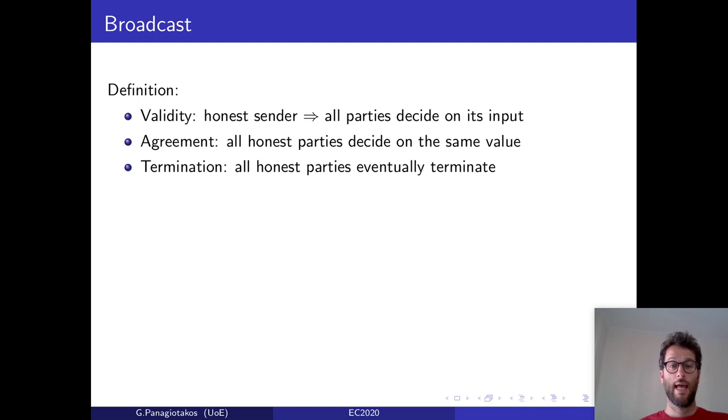So what we did next was to revisit the broadcast impossibility result of Pfitzmann and Waidner. A protocol implements broadcast if it satisfies three properties. First, validity. That is, if the sender is honest, then all parties should decide on the sender's input. Second, agreement. That is, all honest parties should decide on the same value. And finally, termination. That is, all honest parties should eventually terminate.